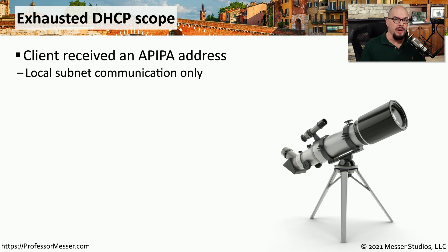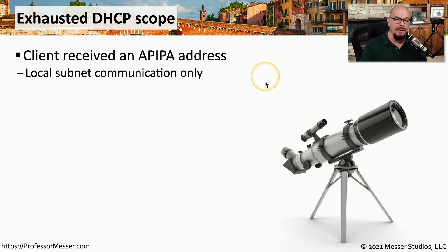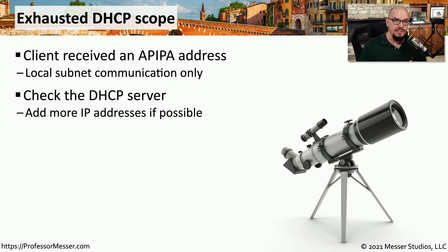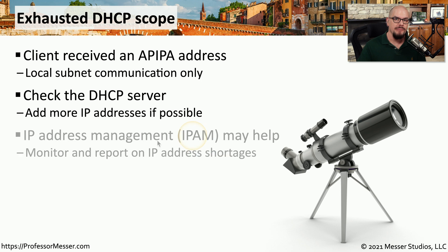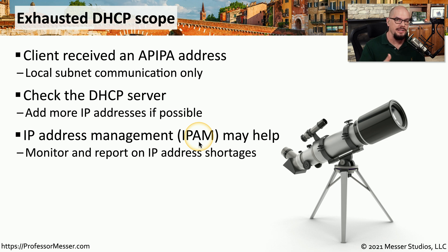You might also run into situations where there are no more IP addresses in the pool of your DHCP server. This is an exhausted DHCP scope, and any device that can't receive an IP address will usually have an automatic private IP address assigned. The challenge with an APIPA address is that those devices will only be able to communicate on the local subnet and will not be able to communicate to the internet. Your first stop should be with your DHCP server to confirm the pool has been depleted. An IP address management or IPAM device may be able to monitor and alert on exhausted scopes.